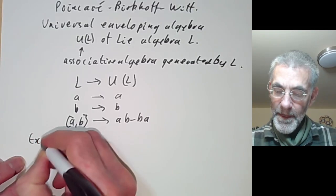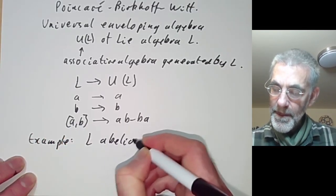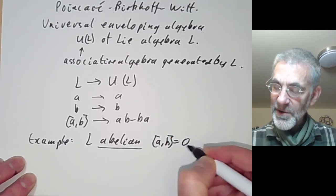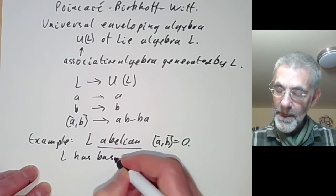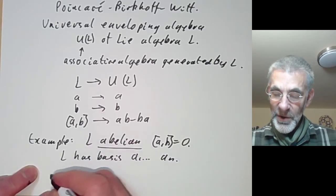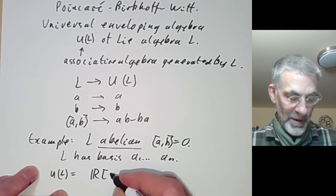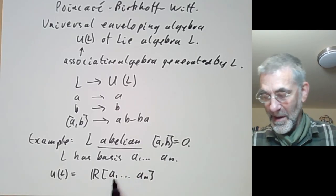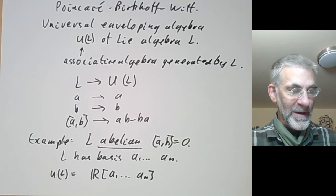For example, suppose L is abelian, so the bracket AB equals 0 for all A and B, and suppose L has a basis a₁ up to aₙ. Then the universal enveloping algebra is just a polynomial algebra on elements a₁ up to aₙ because they all commute, and the universal algebra generated by commuting elements is just a polynomial algebra.